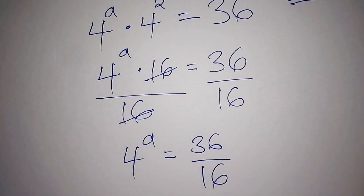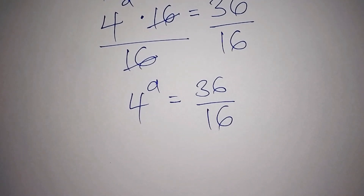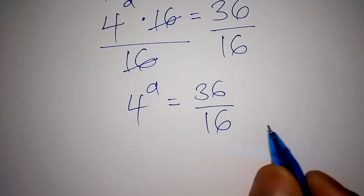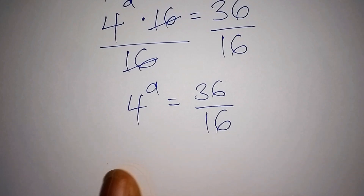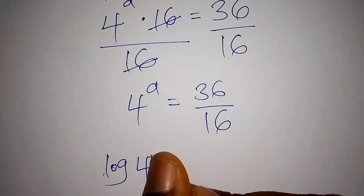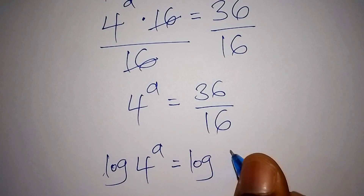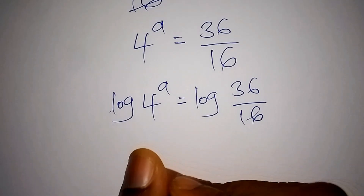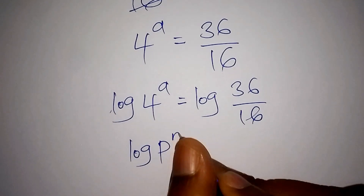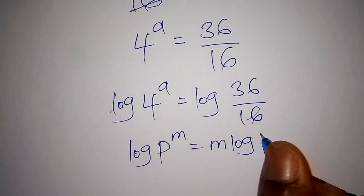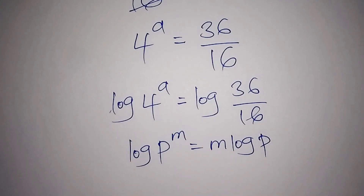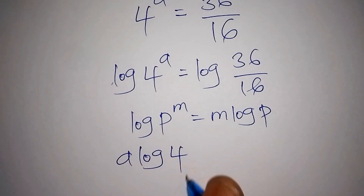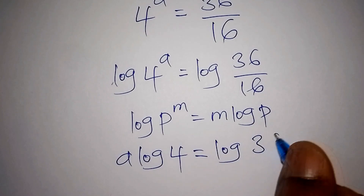Now, the best approach is to introduce the log on both sides. So we have log of 4 to the power of a equals log of 36 over 16. Recalling that the log of p to the power of m equals m times log of p, the log of 4 to the power of a becomes a times log 4. So we now have a log 4 equals log of 36 over 16.